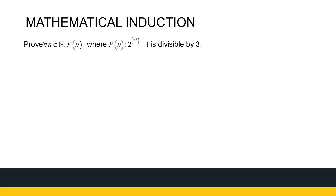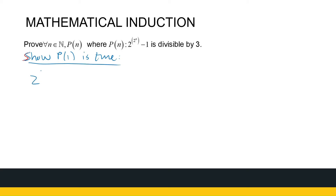So let's take a look at what we're working with here. We're saying for all natural numbers, this must be true. So if I calculate 2 to the power 2^n minus 1, I should get a number that's divisible by 3. We start the same way — show P(1) is true. Looking at 2 to the power 2^1 minus 1, that's 2 to the power 2 minus 1, so it's 4 minus 1, which is 3. And we know 3 is divisible by 3.